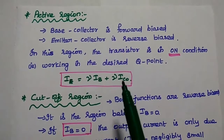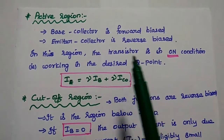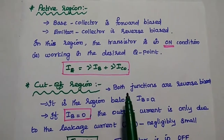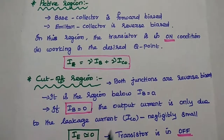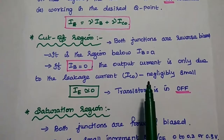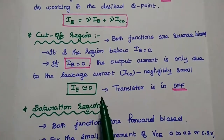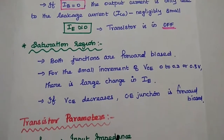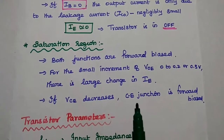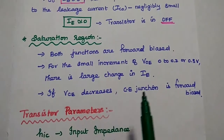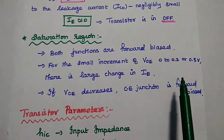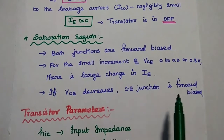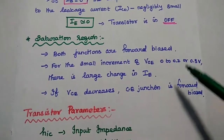To summarize the three regions: in the active region, the base-collector is forward biased and emitter-collector is reverse biased; the transistor is on, working at the desired Q point with maximum current conduction. In the cutoff region, both input and output sides are reverse biased, and the output current is almost 0. In the saturation region, both input and output sides are forward biased, and for a small increment of VCE from 0 to 0.2 volts, there is a large change in output current.